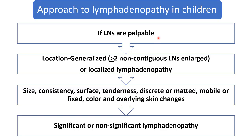Now how to approach: whenever lymph nodes are palpable, you have to differentiate — is it localized lymphadenopathy or generalized? Whenever 2 or more than 2 lymph node areas are non-contiguous and large, we label it as generalized lymphadenopathy. Otherwise, we label it as localized.